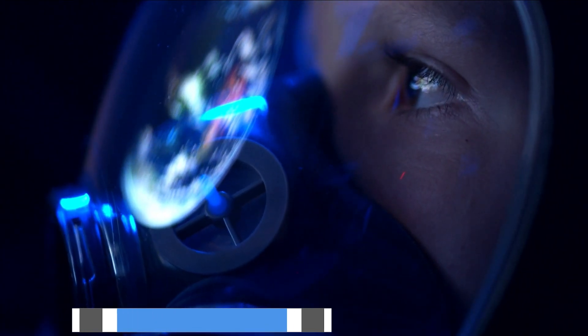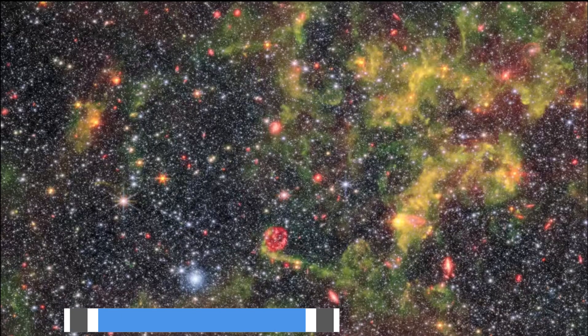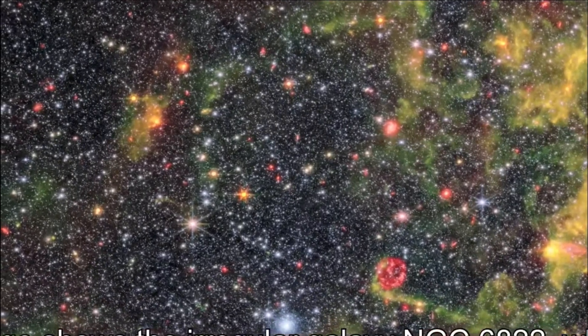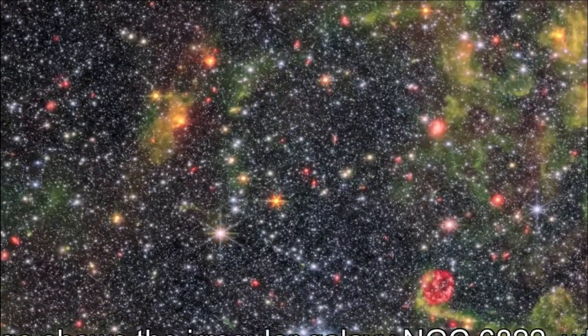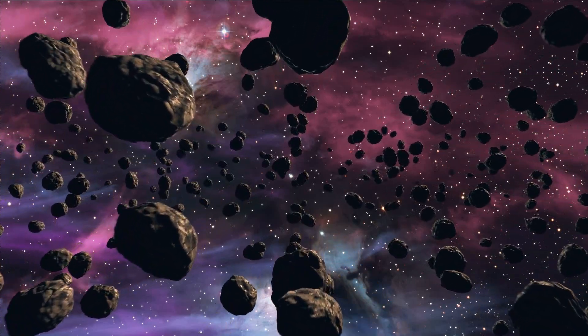Its historical journey began when American astronomer E. E. Barnard first observed it in 1884. Initially categorized as an exceptionally dim nebula, this description cloaked NGC 6822 in mystery for years, leaving its actual dimensions and luminosity open to debate.